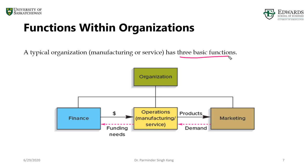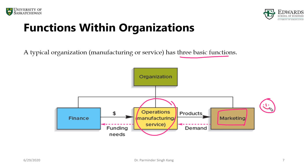The first is the operations function — that's where goods and services are produced. For example, for a cafeteria when you're serving customers you have direct interaction with customers; that's an operations function. There are two functions with which operations interact directly. The first is marketing, which serves as a link between the customer and the organization.